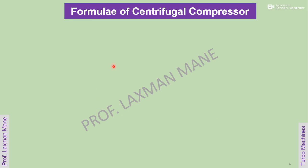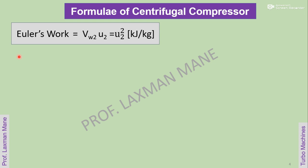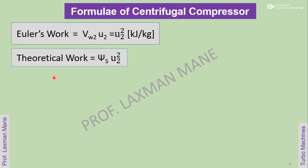Let us summarize the formulae of centrifugal compressor. Euler's work is given as Vw2 into U2, which is equal to U2 square, in kJ per kg. Theoretical work is equal to psi_s into U2 square, where psi_s is the slip factor, which is the ratio of Vw2 to U2.